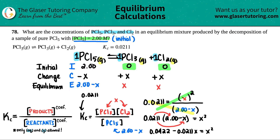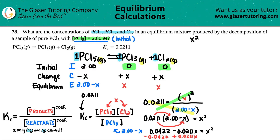To use the quadratic formula, we need everything on one side with x² positive. Bring the other terms over — add 0.0211x and subtract 0.0422 from both sides. The final standard-form quadratic equation is: x² + 0.0211x − 0.0422 = 0.